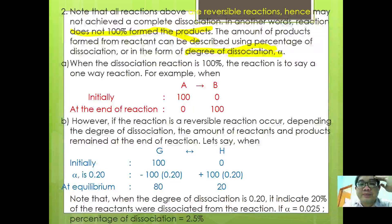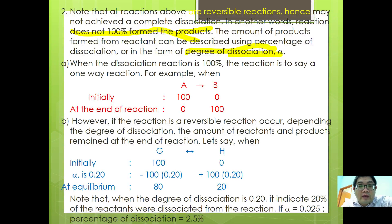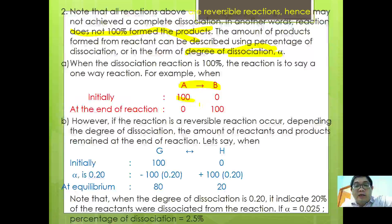When the dissociation is 100%, the reaction goes only one way. For example, A dissociates to become B. So initially if you have 100, at the end of the reaction you also have 100 of B, and you have no more A remaining as a reactant.